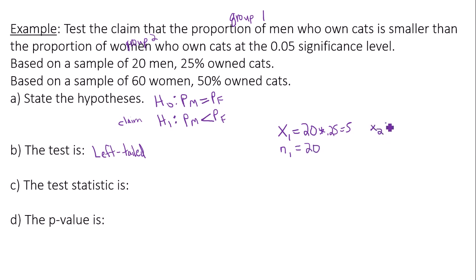And group two, number of women that own cats was 60 times 0.50, which is 30. Sample size was 60. And then my alternative hypothesis sign was less than. These are the five pieces of information you need to put into Google Sheets.